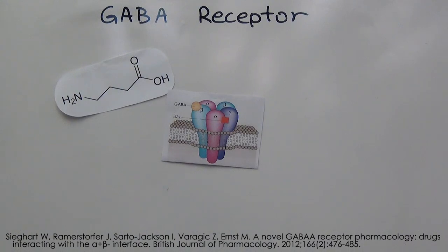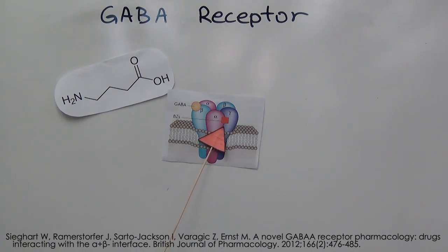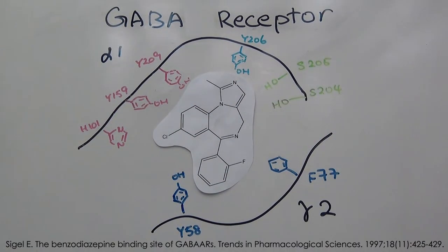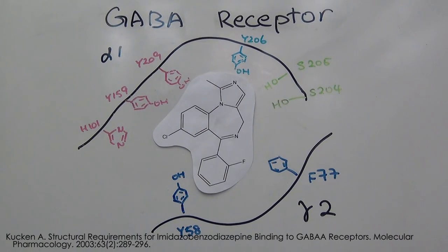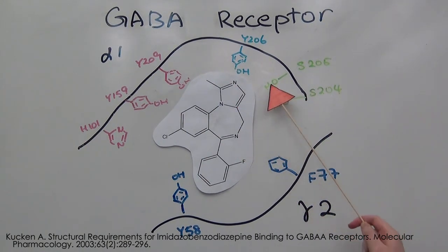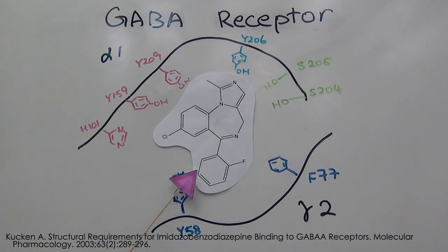When administered, midazolam crosses the blood-brain barrier into the brain via transmembrane diffusion. Midazolam then binds to a specific allosteric site on the alpha-1, gamma-2 subunits of the GABA-A receptor, acting as a positive allosteric modulator. This means that a smaller concentration of GABA is needed to elicit the effect. Between the alpha-1 and gamma-2 subunits, midazolam forms bonds with mostly amino acid residues of the alpha-1 subunits. There are four pi-pi stacking interactions with residues histidine-101, tyrosine-159, 209, and 206. There are also three hydrogen bonding interactions with alpha-1 subunit residues tyrosine-206, serine-204, and serine-205. There are only two pi-pi stacking interactions between midazolam and the gamma-2 subunit, with residues tyrosine-58 and phenylalanine-77.